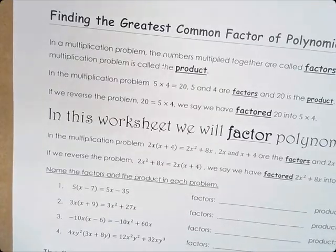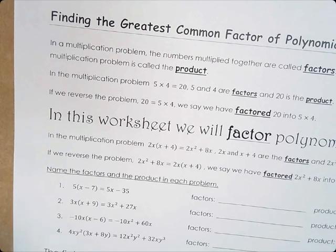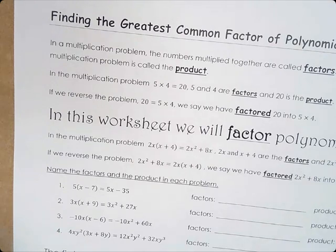In math, we're always learning how to do something and then learning how to undo it — like adding, and to undo addition you would subtract. Multiply, and to undo multiply you would divide. With fractions, you would do the reciprocal. So you're always finding out how to do the opposite, basically undoing something.